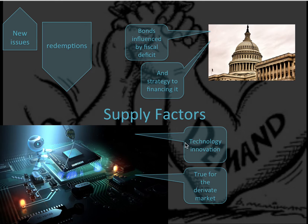There are also supply factors related to technology and innovation — this has been very true for the derivative market. Before, derivatives took quite a long time to calculate: the strike price and various other things. But today we have technology, formulas, and the internet that can calculate these prices extremely quickly and update them every second. Because of this technology — and there are even apps now where you can purchase derivatives on your mobile phone — this has increased the supply of this asset class, making it easier for investors to invest in.